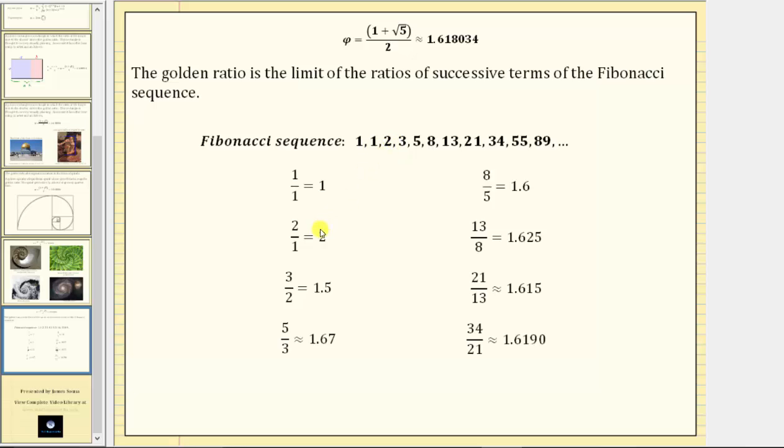And then we have two divided by one, which is two, followed by three divided by two, which is 1.5. And then we have five divided by three, which is approximately 1.67.